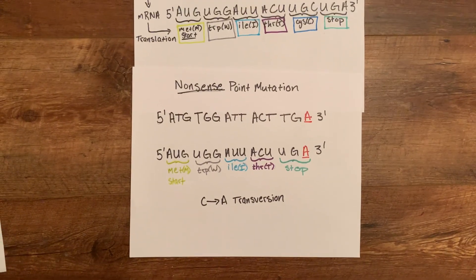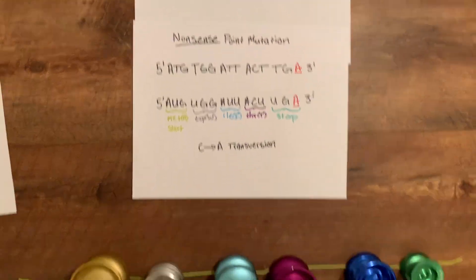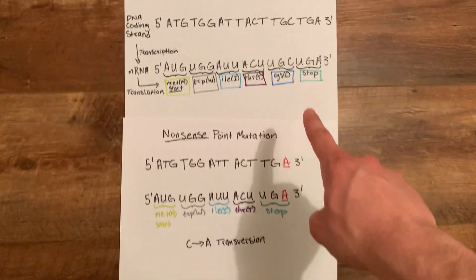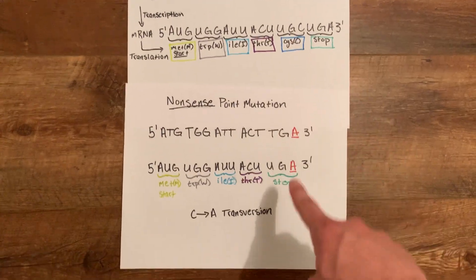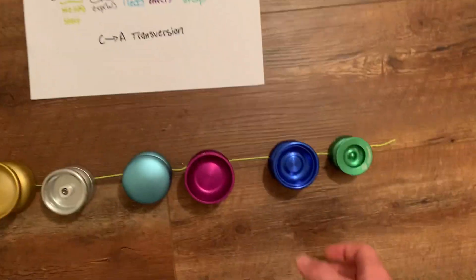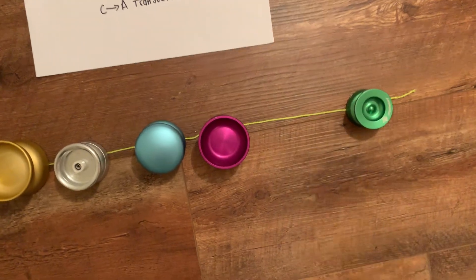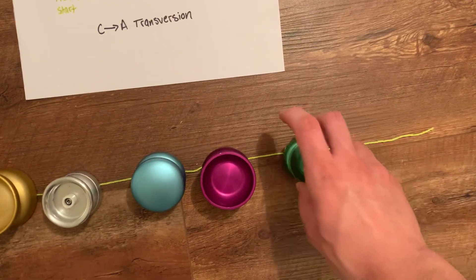For a nonsense, it replaces an amino acid with a stop. So this C to A is a transversion, and we see here that initially it was a C amino acid but is now a stop. So we will take out the C, but now there's a stop in its place.